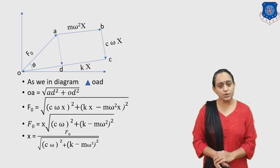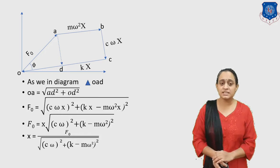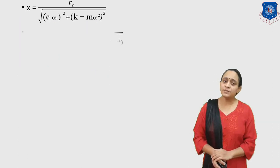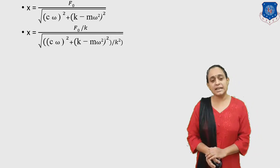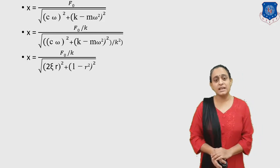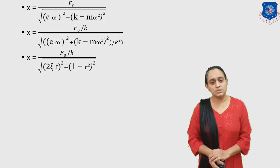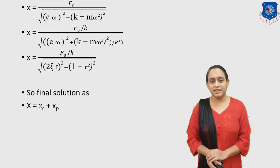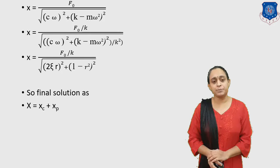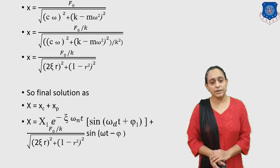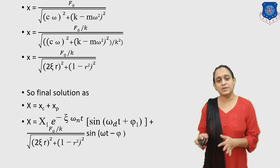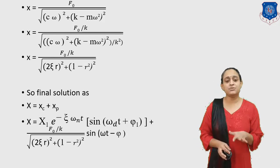The final complete solution is X = Xc + Xp: X = X1·e^(−ζωt)·sin(ωd·t + φ1) + (F0/K) / √[(2ζR)² + (1 − R²)²] · sin(ωt − φ). This is our final solution for forced damped vibration using the graphical method.